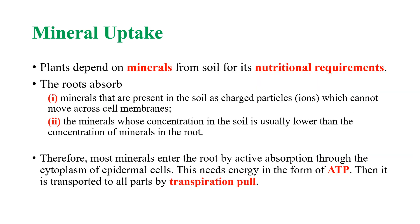Next is mineral uptake in plants. Plants receive nutrition from soil minerals, which are absorbed by roots. Roots can absorb two kinds of minerals: minerals that are present in the soil as charged particles — that is, ions — and minerals whose concentration in the soil is lesser than that in the root. Hence, most of the minerals required by plants are absorbed by roots. These minerals are then transported to other parts of the plant by transpirational pull, which requires energy in the form of ATP. Hence, minerals enter the plant following the same pathway as water.